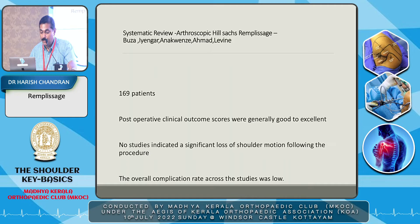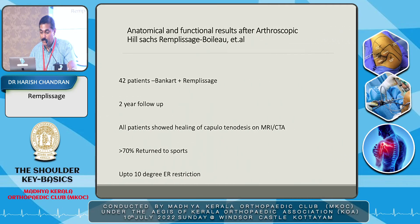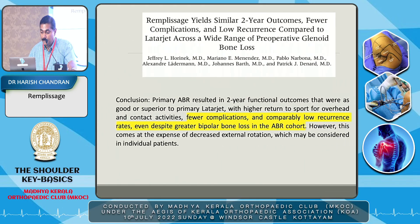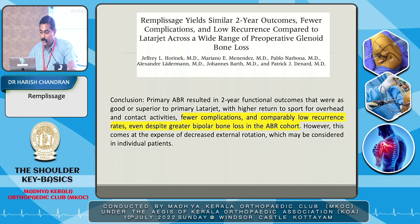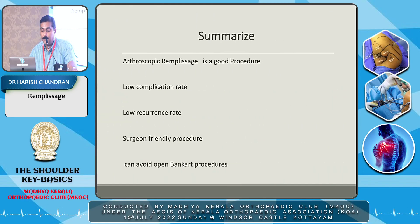Another systematic review confirms post-operative clinical outcome scores are generally good to excellent with low overall complication rates. Pascal Bollier's paper with 42 patients — Bankart plus Remplissage, two-year follow-up — showed 70% return to sports with up to 10 degrees of external rotation restriction. The most recent 2022 study reports low complication rates and comparable low recurrence rates even despite greater bipolar bone loss. In summary, Remplissage is a good procedure: low complication rate, low recurrence rate, surgeon-friendly, and allows avoidance of open Bankart procedures.